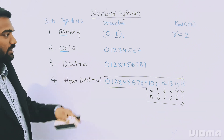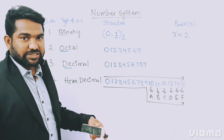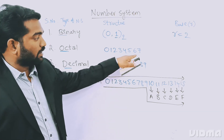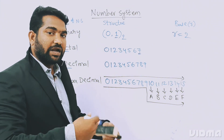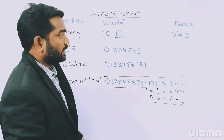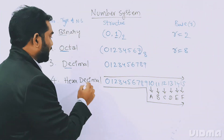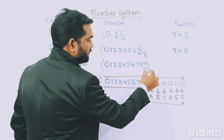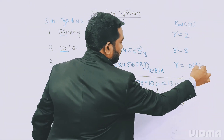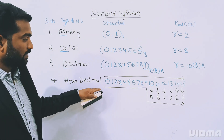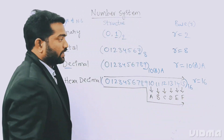For octal number system, the total available digits are 0 to 7, and the maximum value is 7. The base must be greater than 7, so r equals 8. For decimal, the maximum value is 9, so base r equals 10. For hexadecimal, the maximum value is 15 (or F), so the base is 16, r equals 16.